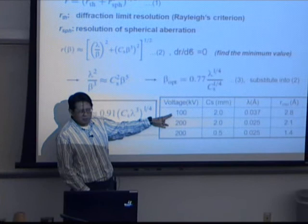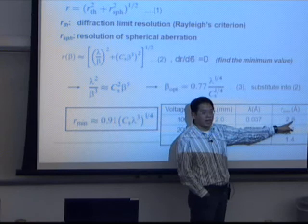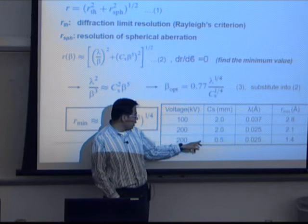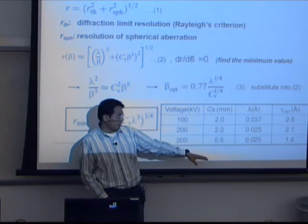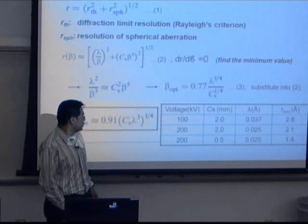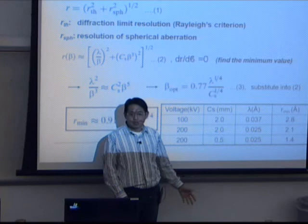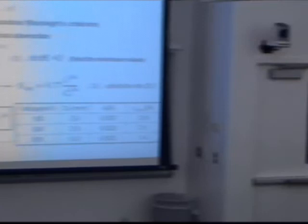For example, if you only increase the energy of the electron, you can only improve the resolution from 2.8 Angstrom to 2.1 Angstrom. But if you reduce the spherical aberration coefficient C_s from 2 to 0.5 — which is what we have in our NISP lab downstairs — we can improve to 1.4 Angstrom resolution. Nowadays, if you want sub-Angstrom resolution, it would probably cost one or two million dollars to set up a system that corrects the spherical aberrations.